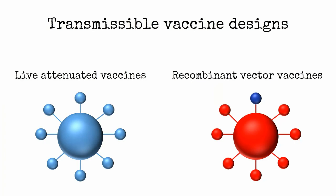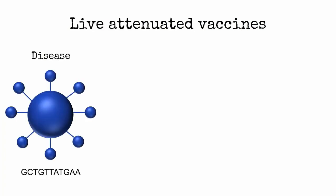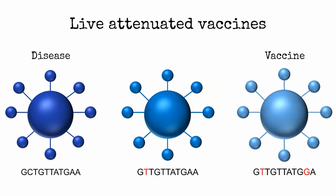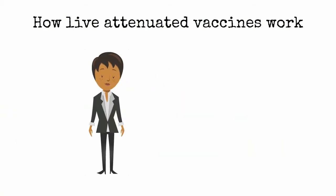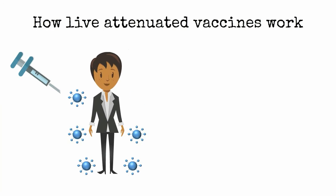Live attenuated vaccines are mutated, genetically weakened versions of the disease they are designed to protect against. The idea is that they create a subdued infection that is otherwise similar to the disease and elicits immunity just as if you were infected by the disease, but they don't grow well enough in you to make you sick.